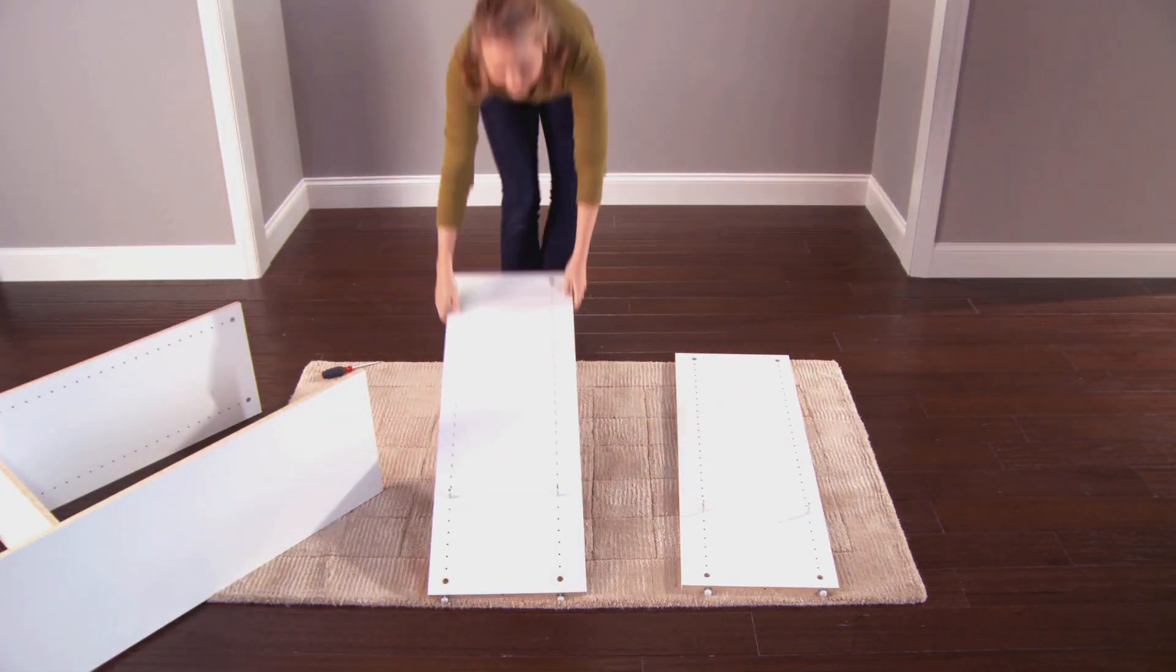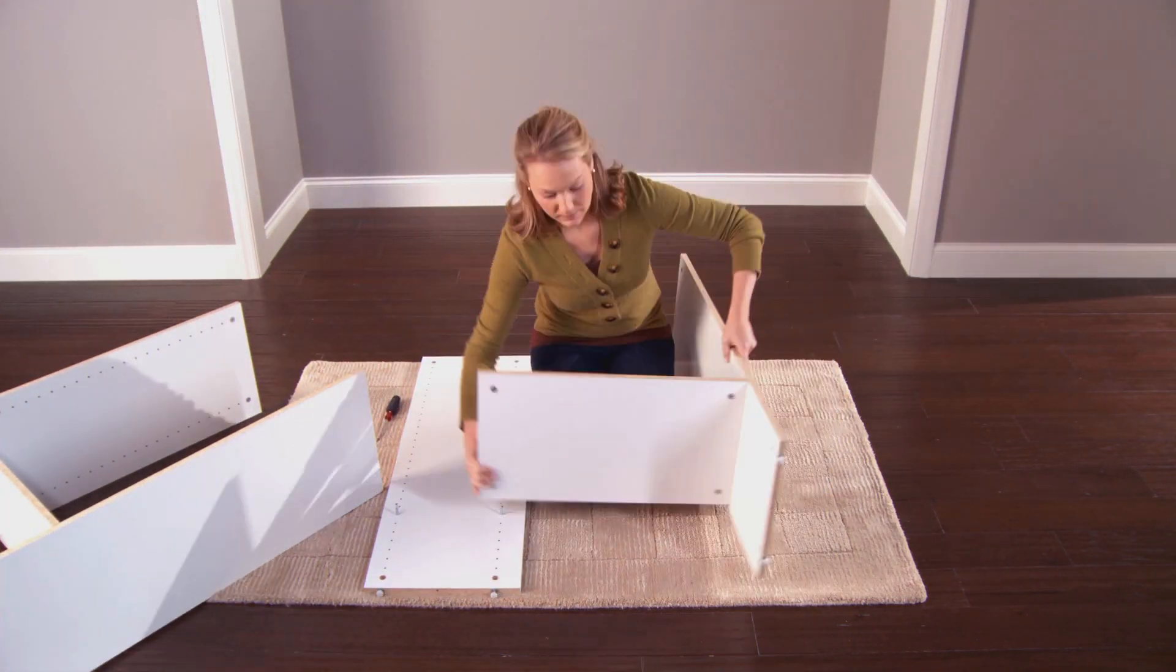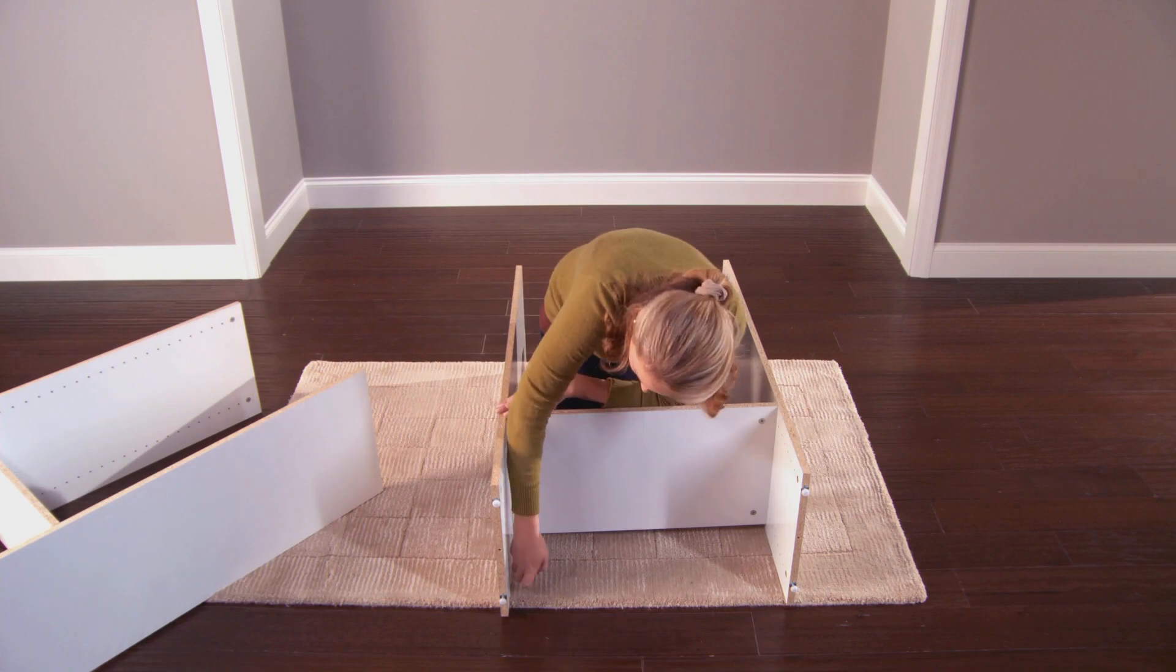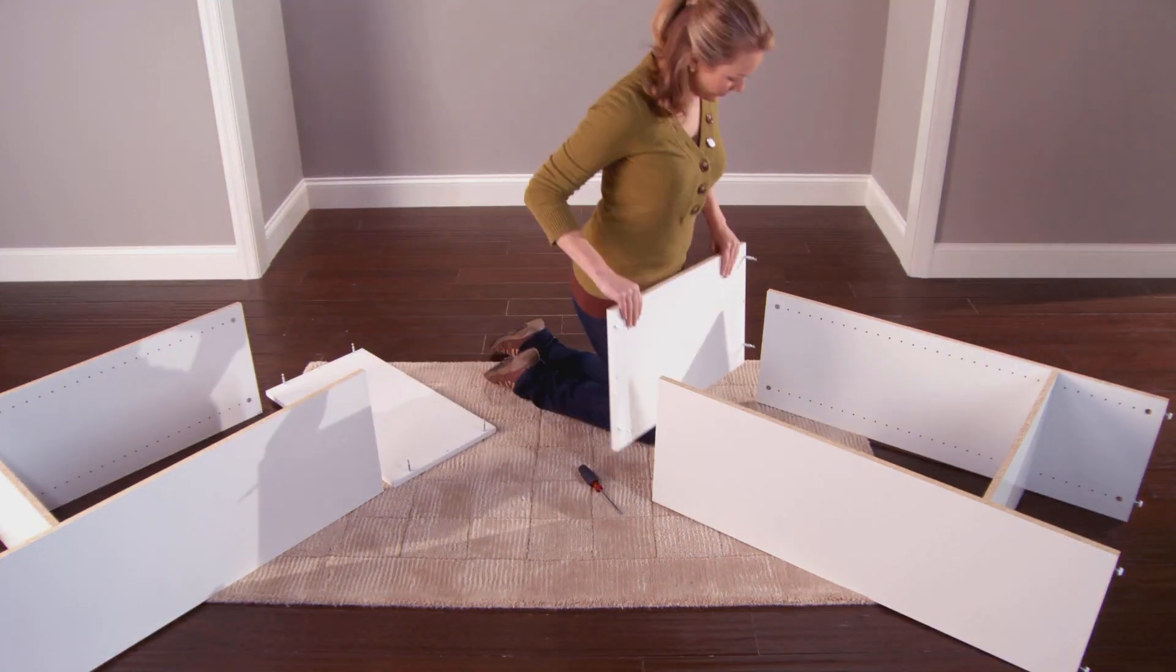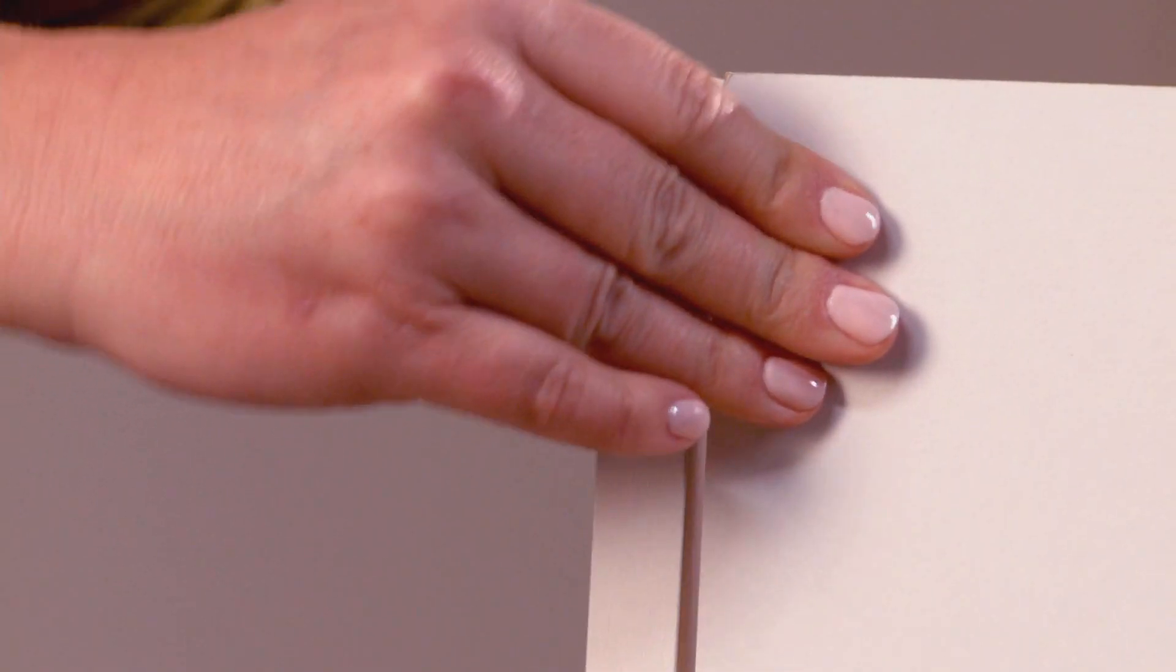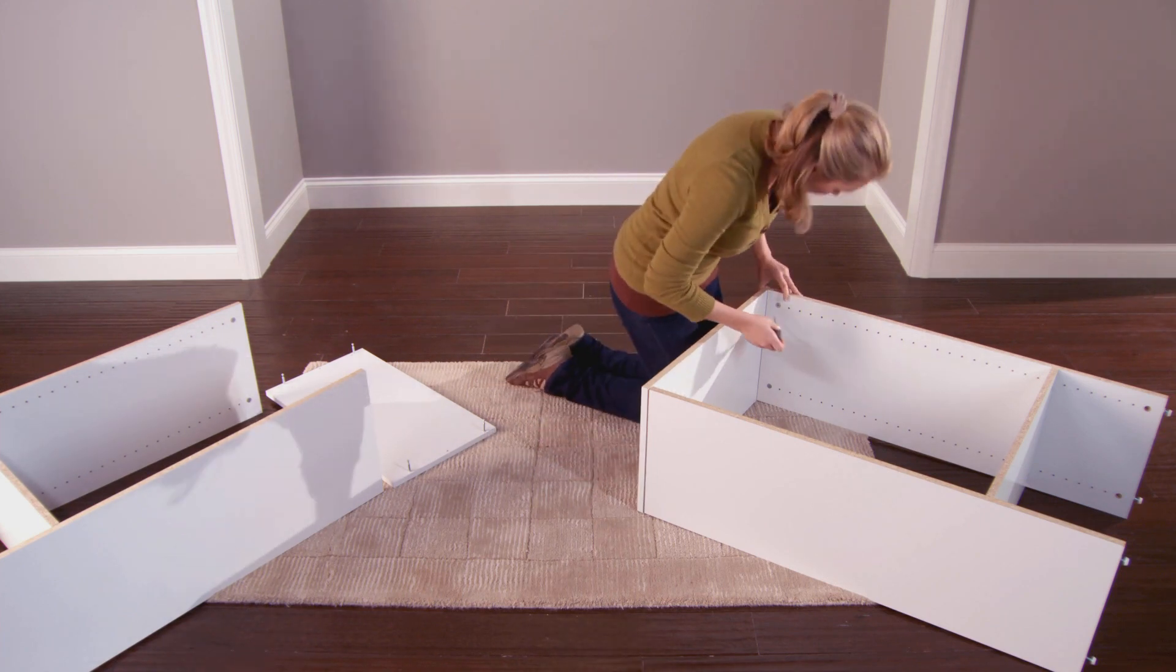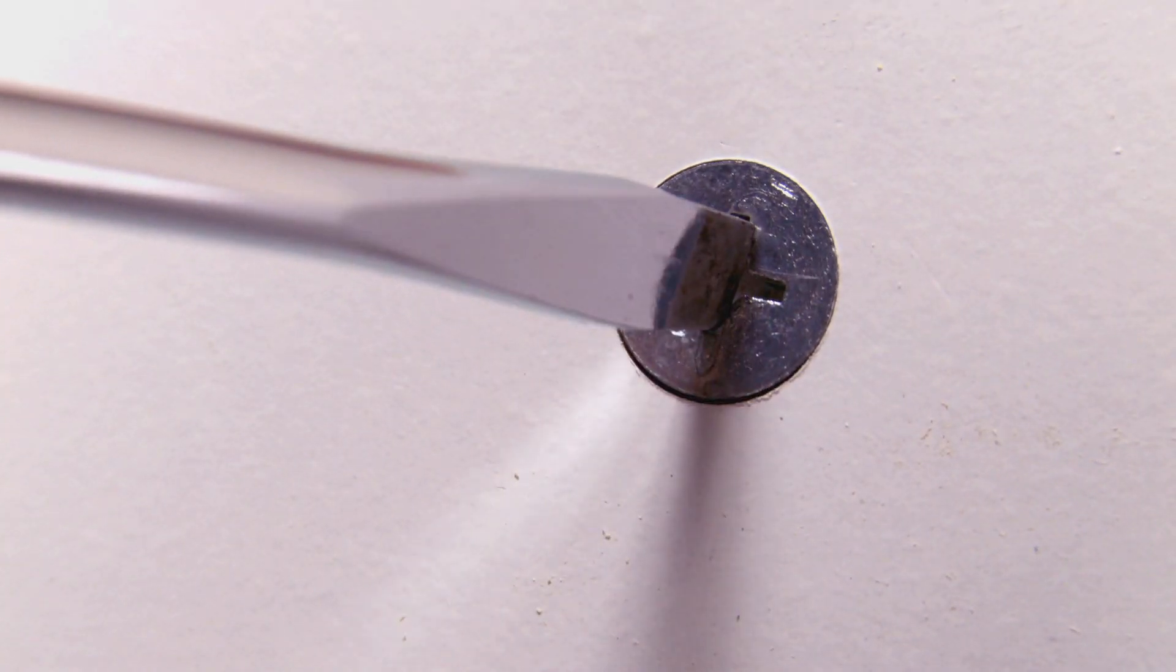Repeat for the second set of bottom shelf and side panels. Then attach the top panel to the base and top units. Take the top shelf and push the cam posts into the holes at the top of the side panels, then tighten the cam locks.